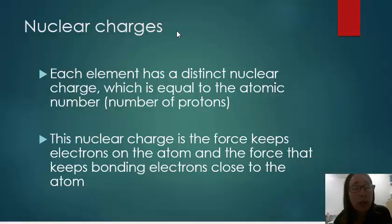So for example, nitrogen has seven protons. Each proton has a charge of plus one. The nuclear charge of nitrogen is plus seven—that's the charge of the nucleus.